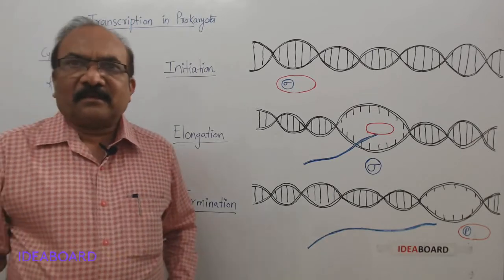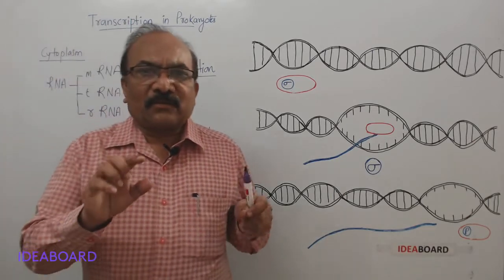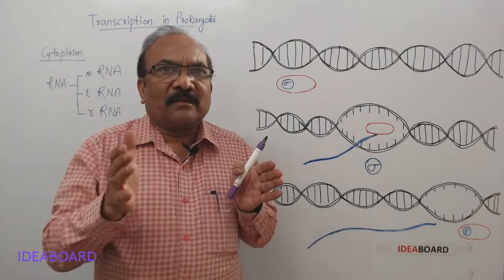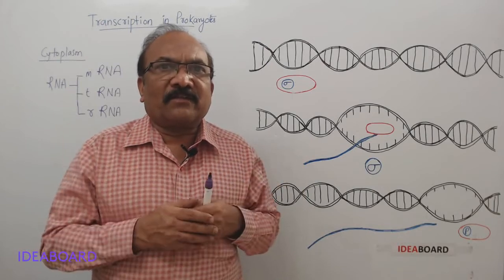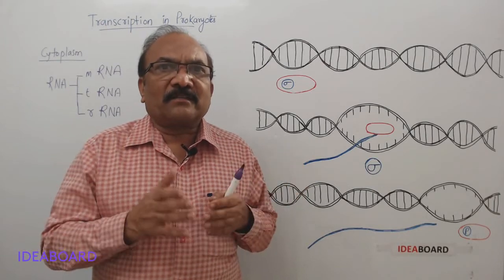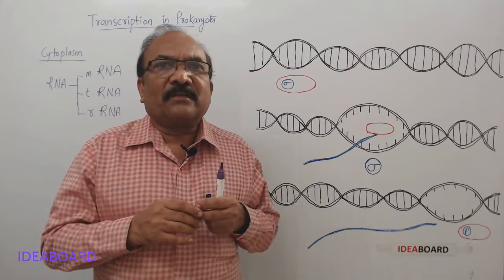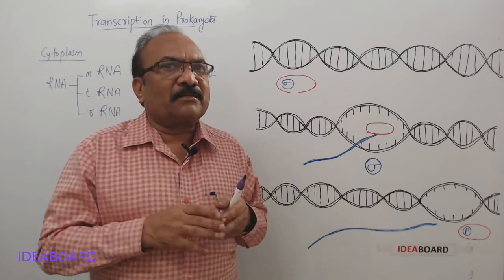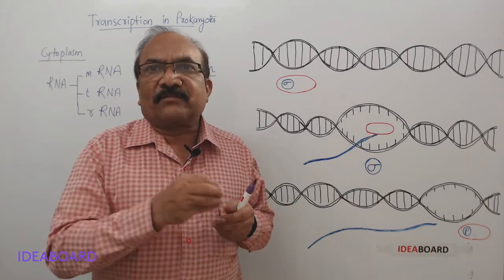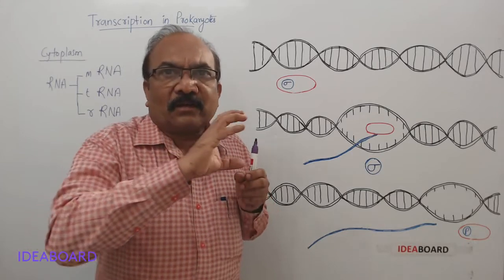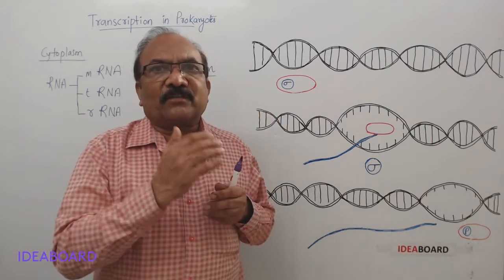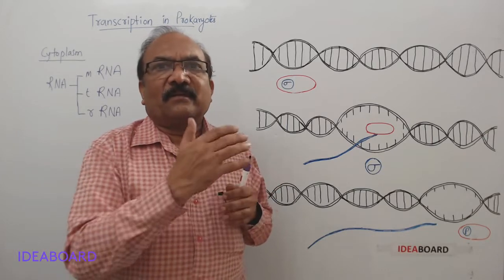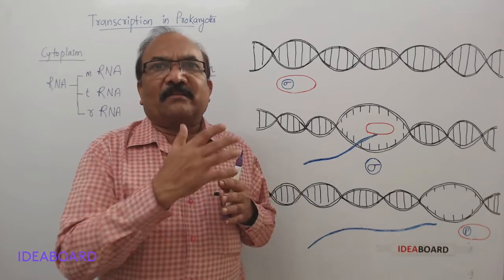The question is, transcription occurs not on the entire DNA, but only a segment of DNA, and we call that segment a transcriptional unit. In that transcriptional unit, as we already discussed in the previous video, three regions will be there: the first one is promoter site, the second one is structural gene, and the third is termination site or terminator region.